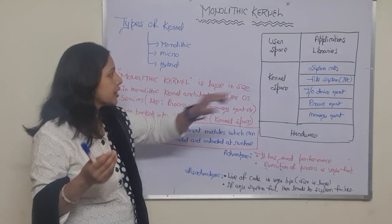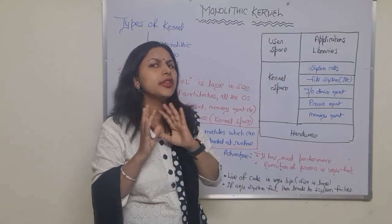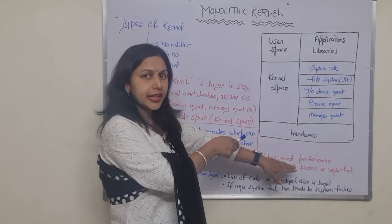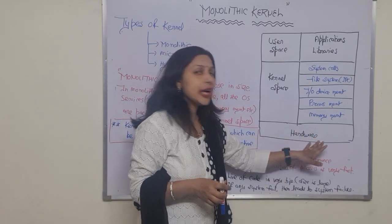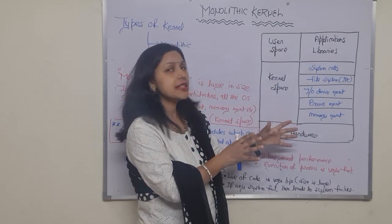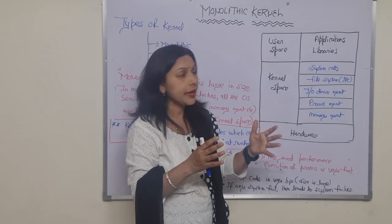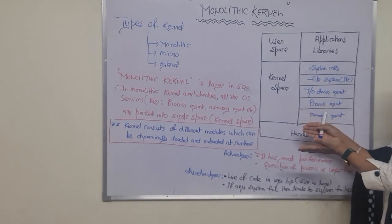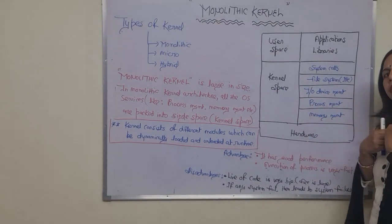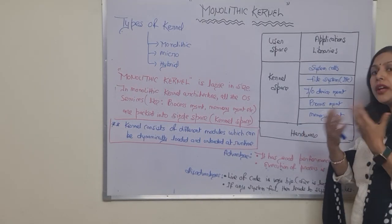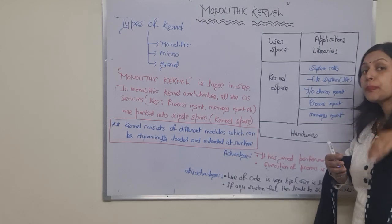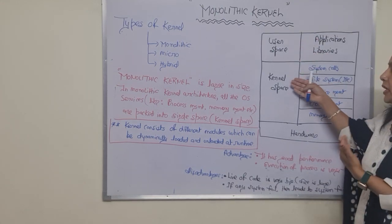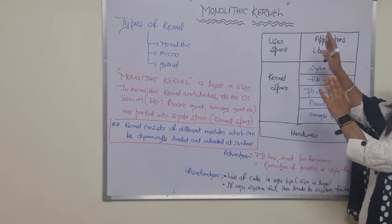Why is it large in size? In the case of a kernel, we have two kinds of spaces: user space and kernel space. With the help of this diagram — computer hardware means the computer system — the operating system runs on the hardware. If we talk about the structure of the operating system, we have two kinds of spaces in the background: user space and kernel space.